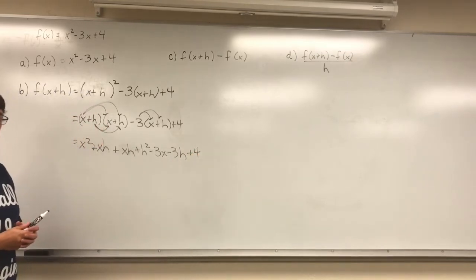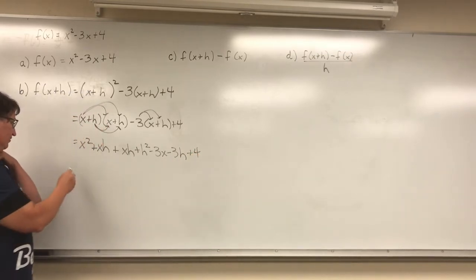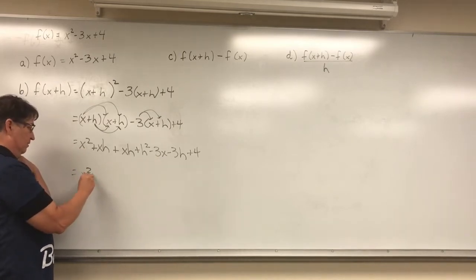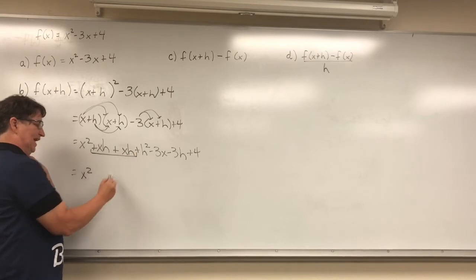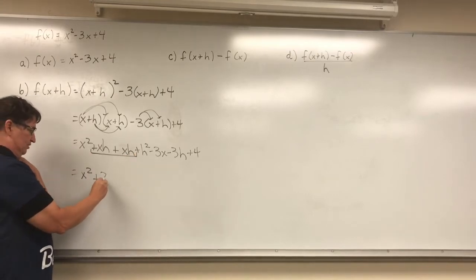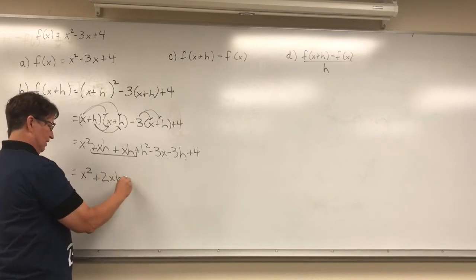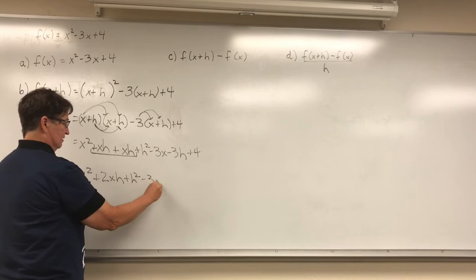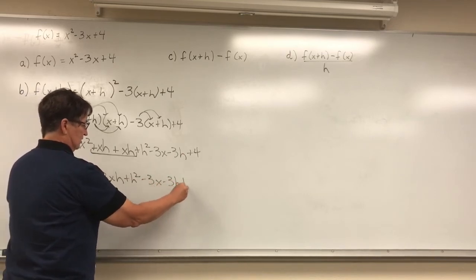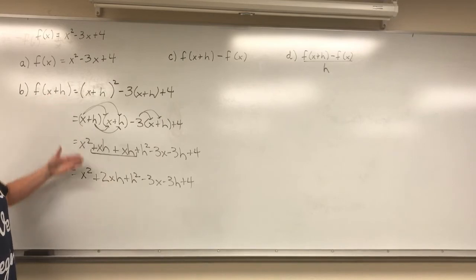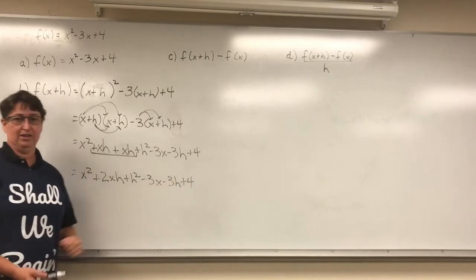Now I'm going to combine whatever like terms I have. Let's see if we have anything that's alike. There's not another x squared there. But there are 2xh's here, so I could say 2xh. There's not another h squared, not another x or h. So when I evaluate this function at x plus h, I get this big long thing here.